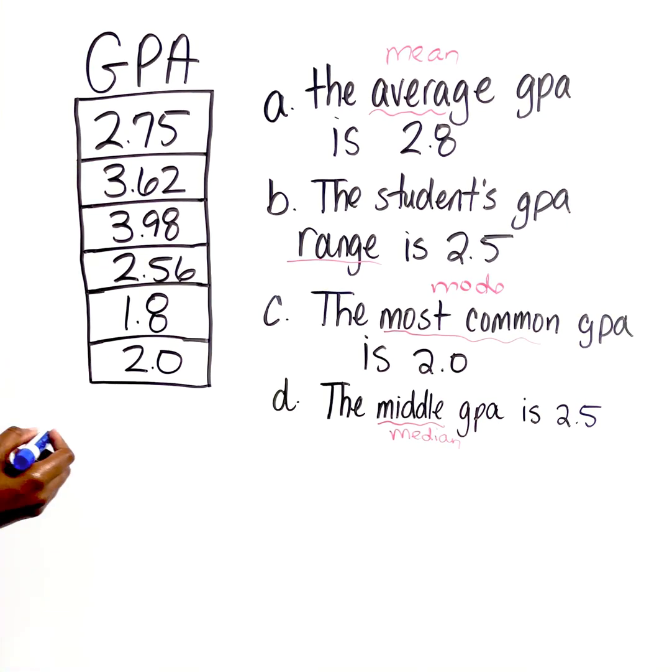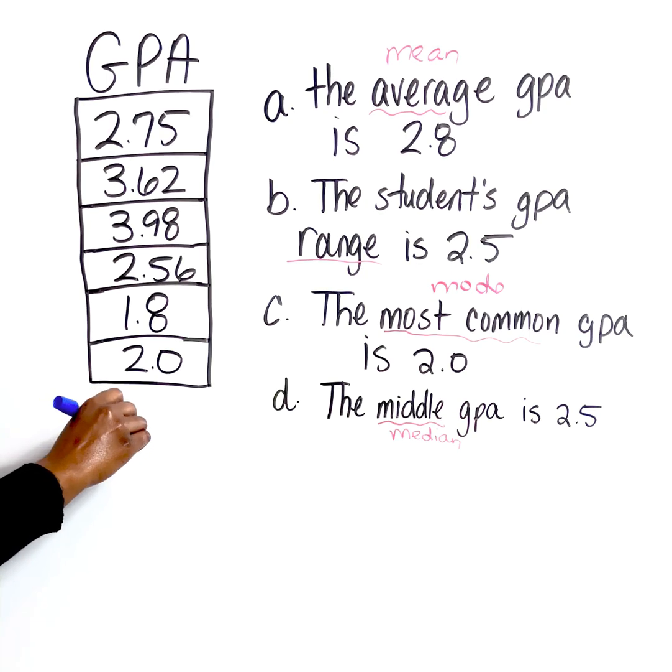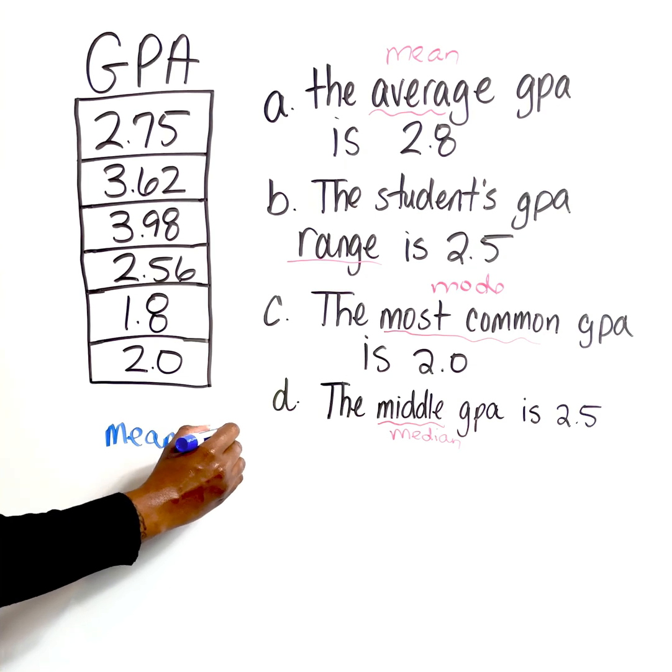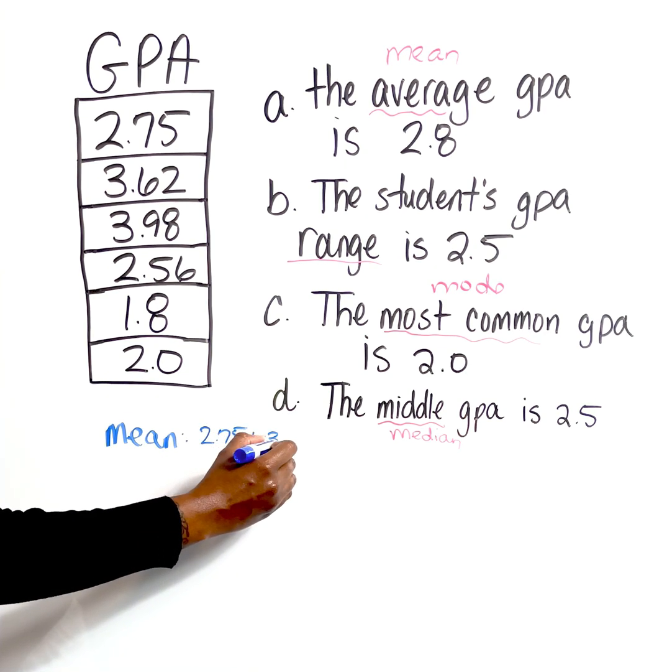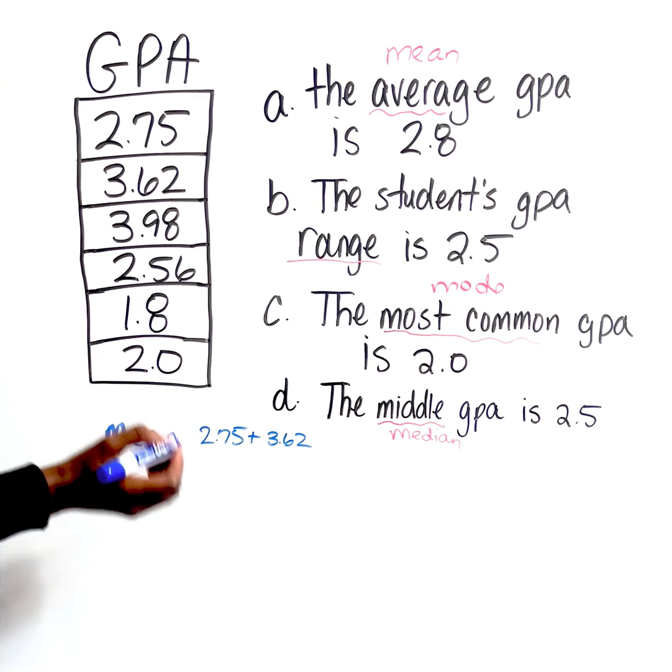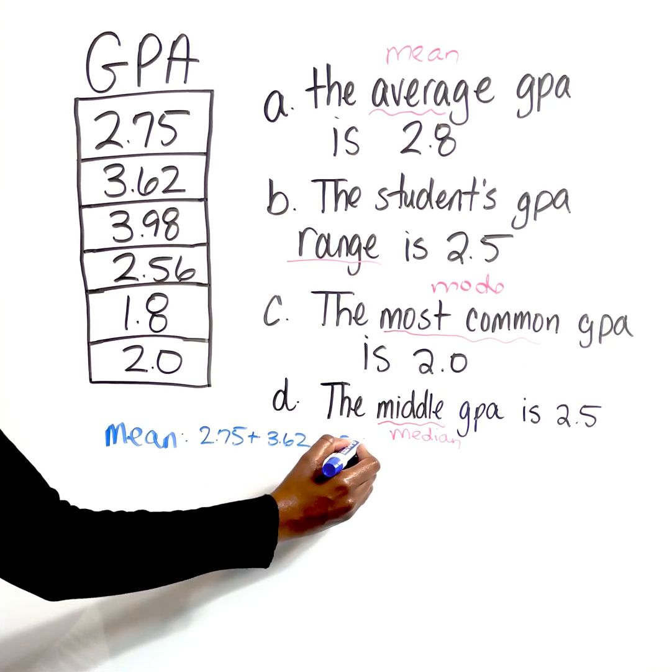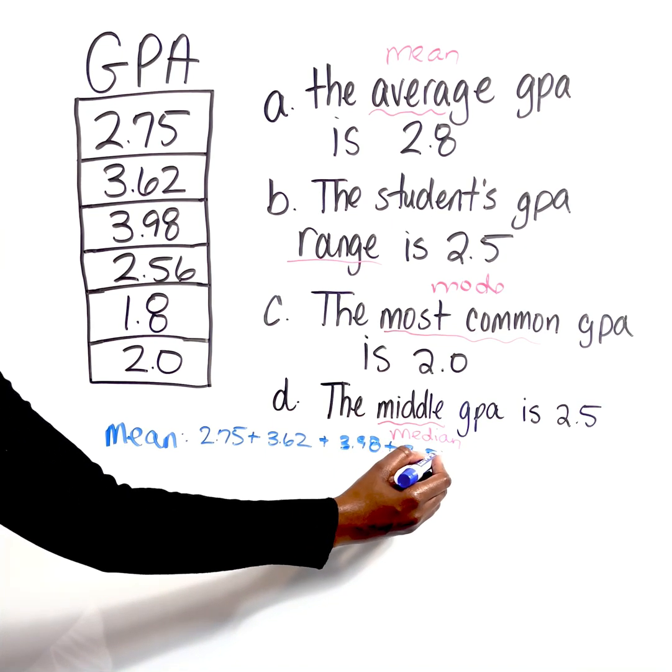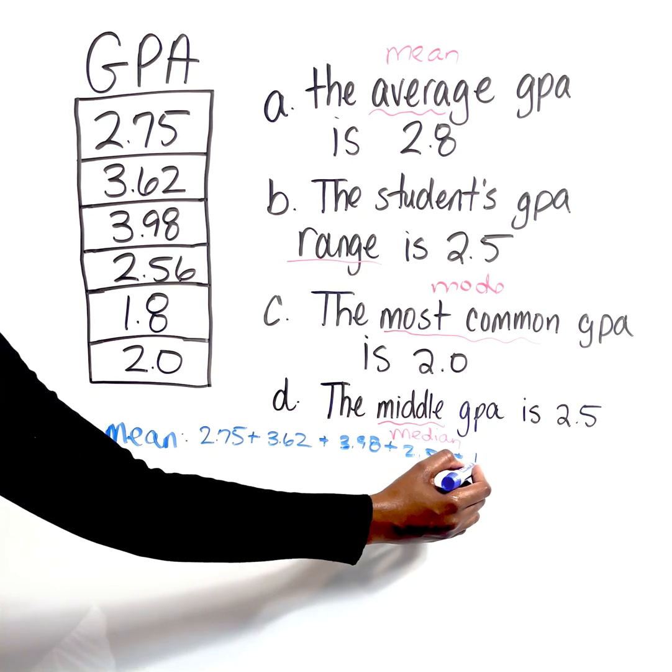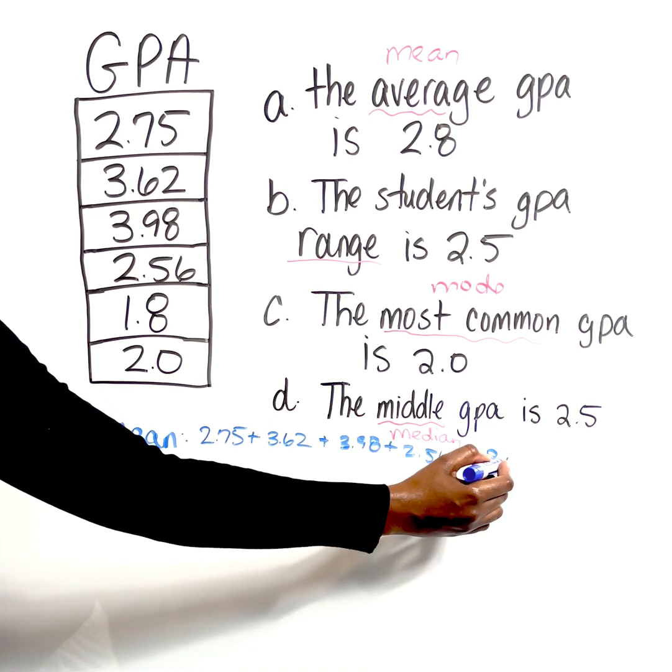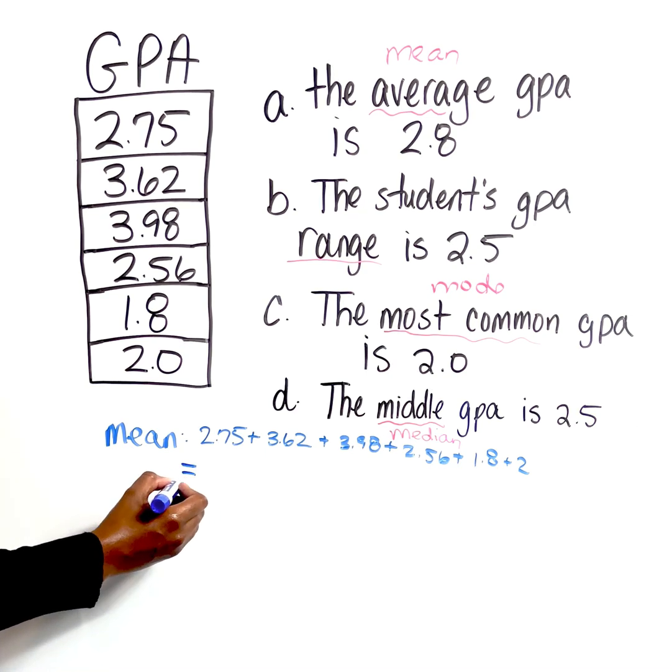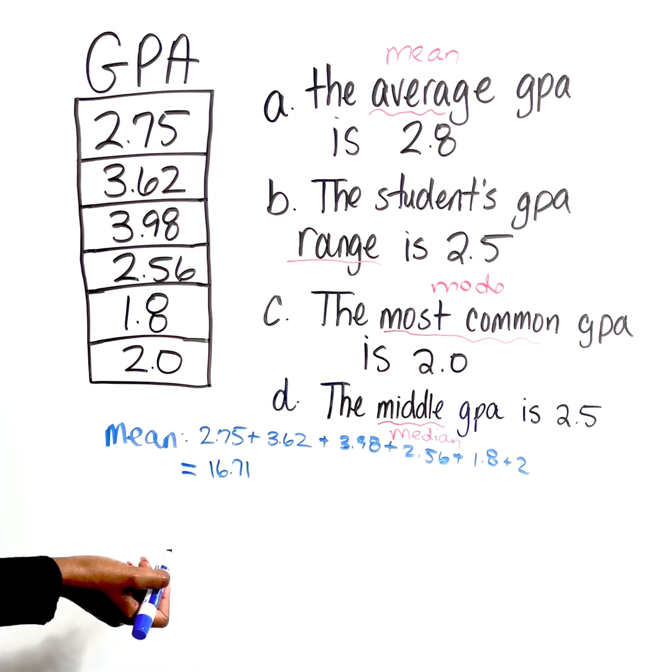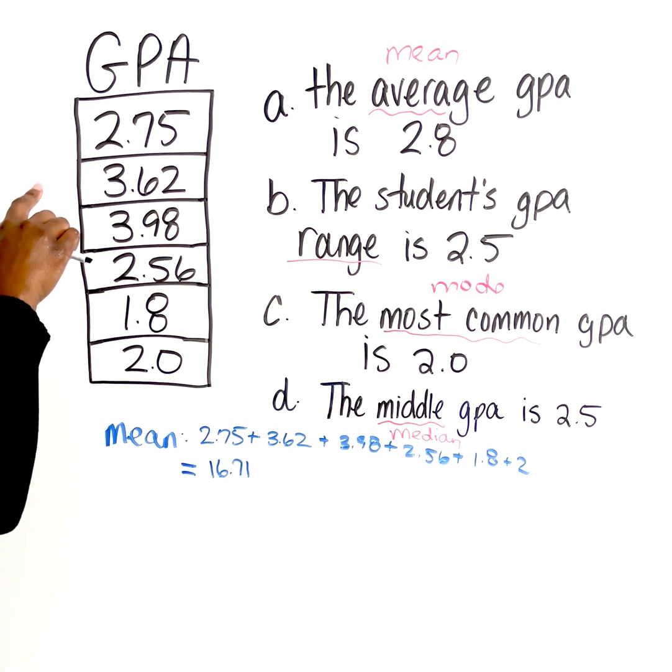So we have for the mean, we're going to do 2.75 plus 3.62 plus 3.98 plus 2.56, forgive my writing on the slant, plus 1.8 plus 2. And that's going to give me a total of 16.71. And our second step, of course, is always to divide by the number of values that we have in the data set.